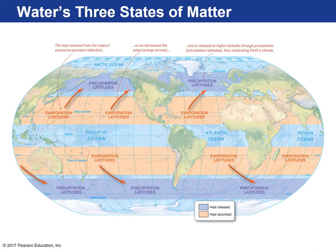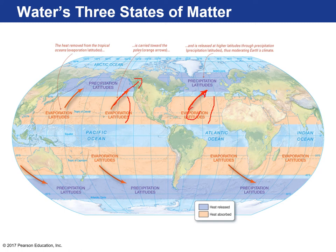Looking at the globe, there are evaporation latitudes where evaporation exceeds precipitation — a lot of heat is removed from the oceans here and travels through air circulation, bringing heat to polar latitudes. This cools down the hot lower latitudes and transfers heat to cooler regions — that's why lower latitudes don't boil away and higher latitudes don't freeze completely.